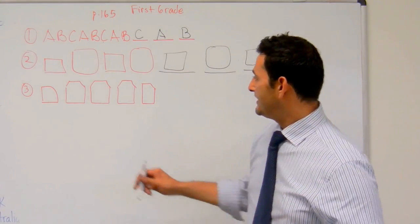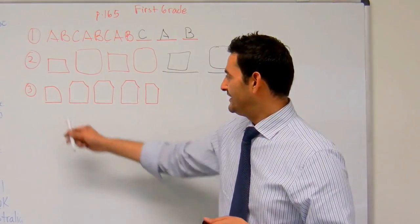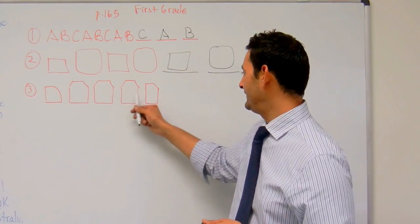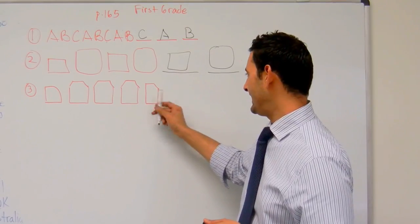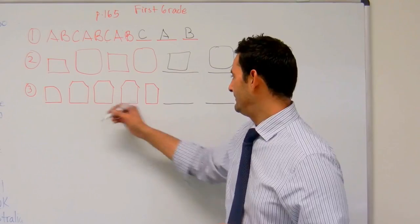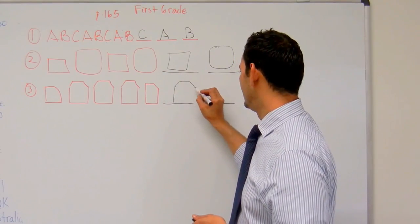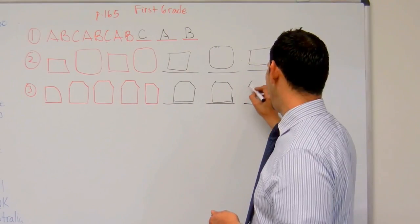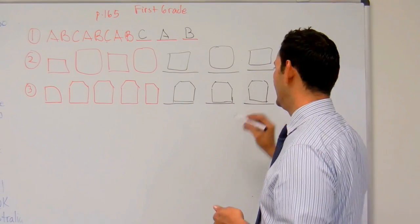Here we have this shape here. Then we have two of these shapes. Actually one, two, three of these shapes. Then we have this shape again. So what's the pattern going to be? It's going to be this shape, this shape again, and that shape again.